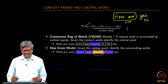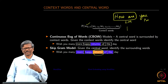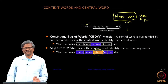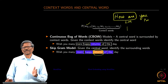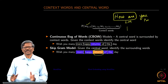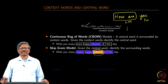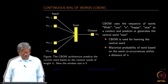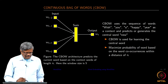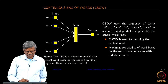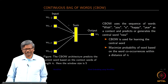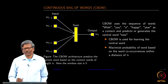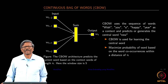That is the difference. In the case of continuous bag of words, given the surrounding context words, I want to find the central word. In the case of the skip-gram model, given the central word, I want to find the context. In this case, we have an input layer, then a neuron that sums all the incoming weights, and then an output which predicts the central word.